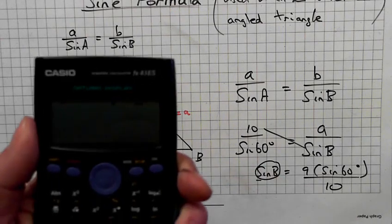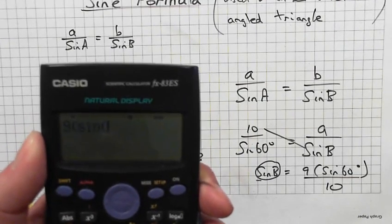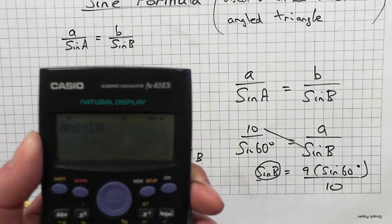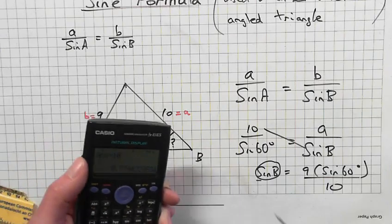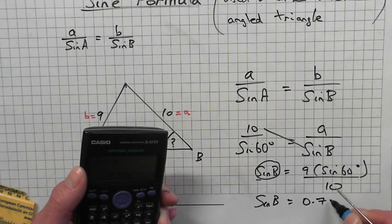Calculate, right. So 9 brackets sine 60, equals equals, and divided by 10. Okay, sine of B is equal to 0.779422.